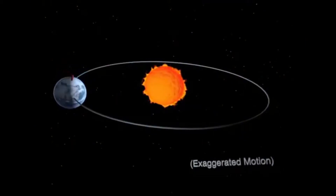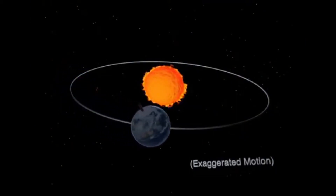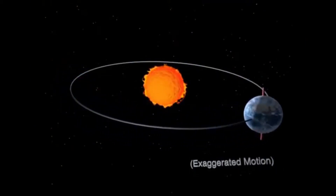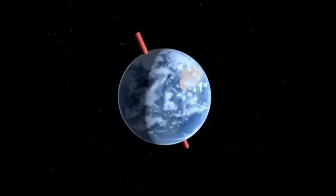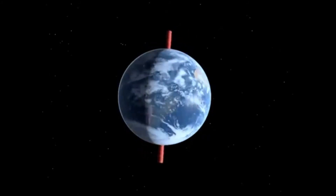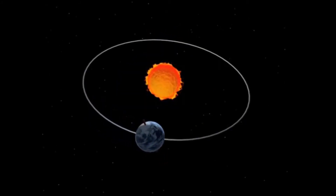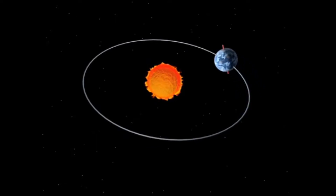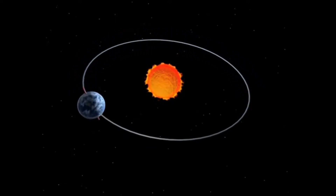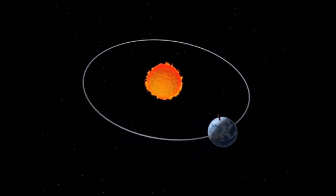During one orbit around the sun, Earth rotates on its axis over 365 times. Thus, an Earth year is about 365.26 days long. Multiply that by four, and then we throw in a leap year here and there, and everybody's happy. Earth's axis of rotation is tilted, producing seasonal variations on the planet's surface. The gravitational interaction between the Earth and the moon causes the ocean's tides, it stabilizes the Earth's orientation on its axis, and it gradually slows its rotation.